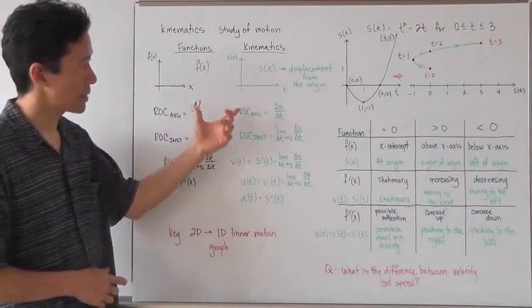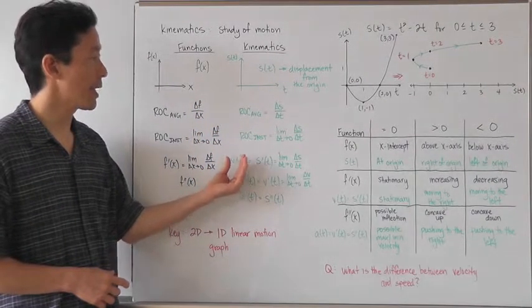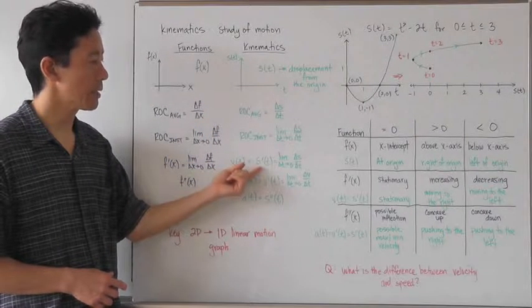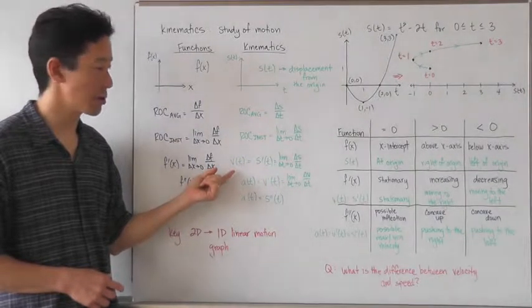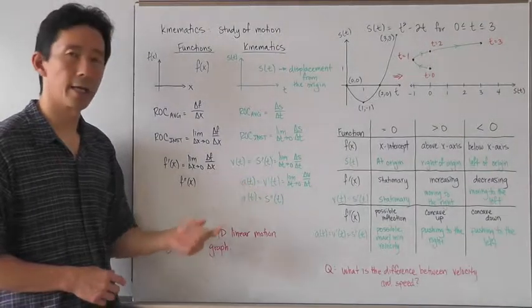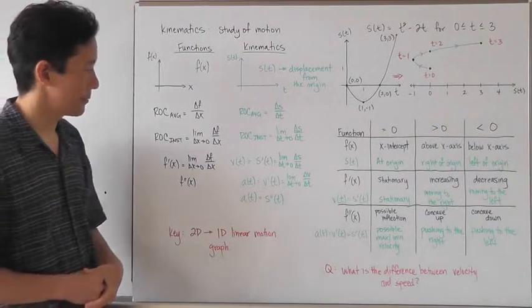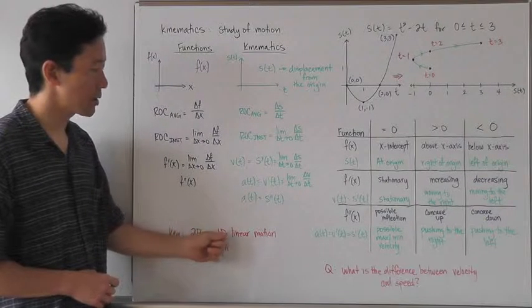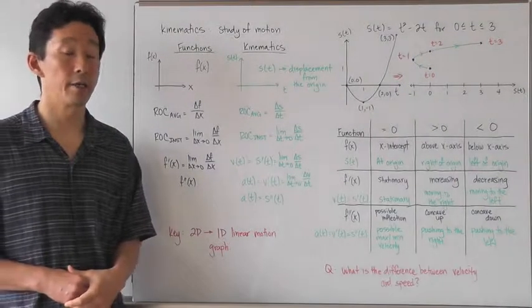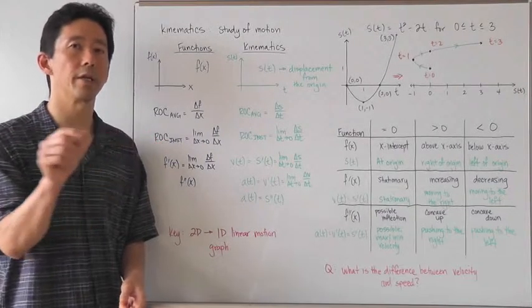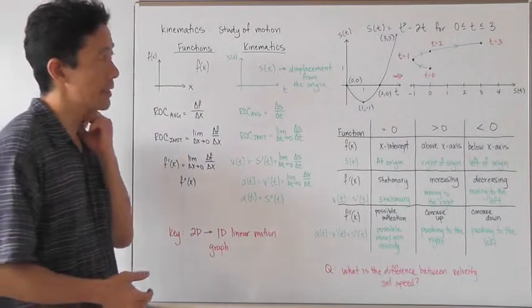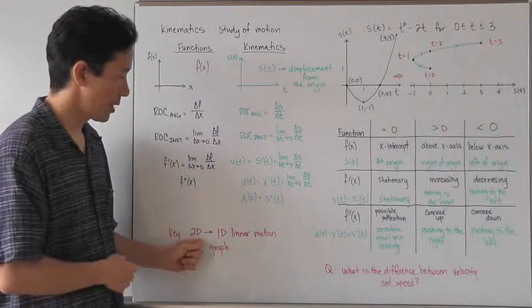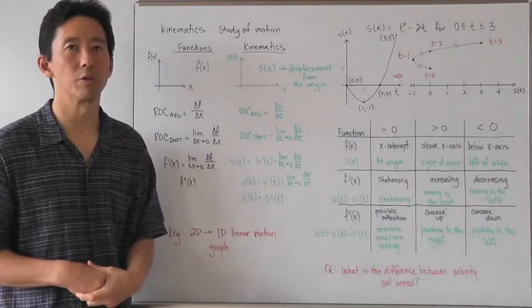Notice there are a lot of similarities mathematically. It's just that when it comes to the application revolving kinematics, we need to make sure that we speak of s prime of t as the velocity function, and v prime of t as the acceleration function. Also, we're going to need to go from two dimensions to one dimension, because when we're talking about linear motion, we're talking about a particle that is just moving either left or right.